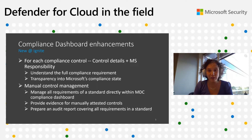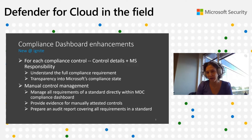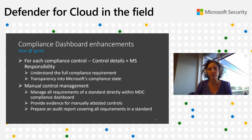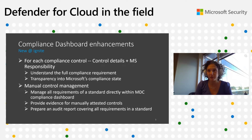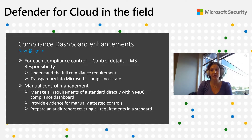In addition, we have a really exciting new release of what we call manual control management. Up until this point, customers could only manage compliance requirements that were automated with assessments in Defender for Cloud. We now have the ability to manage manual requirements as well — requirements that can't necessarily be automated but still need to be met. Customers can provide evidence to show how they're meeting those controls, and then prepare an audit report covering all requirements for a standard, both automated and manual controls.